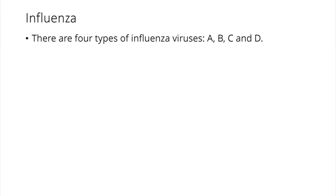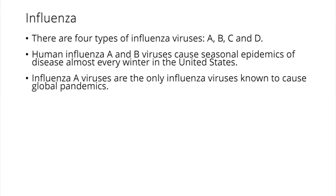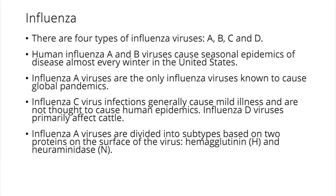There are four types of influenza virus: A, B, C, and D. Influenza A and B viruses are the ones that cause the seasonal epidemics, and only the A virus really causes global pandemics. C is thought to be a pretty mild disease and D is mostly in cattle and not in humans. Influenza viruses are characterized by their subtypes based on two proteins on the cell surface — the hemagglutinin (H) and the neuraminidase (N).